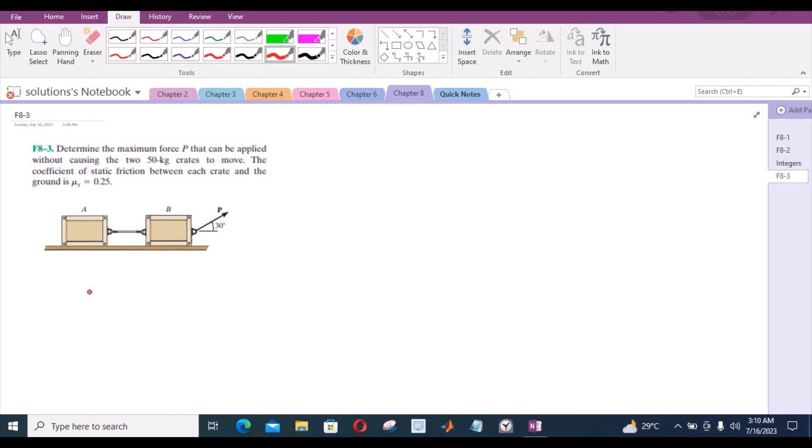Welcome back to the solutions manual. In this video, we will solve the problem F8-3 from RCD Baller Engineering Statics 12th edition. According to this problem, we have to determine the maximum force P that can be applied without causing the 250 kg crates to move. The coefficient of static friction between each crate and the ground is 0.25.